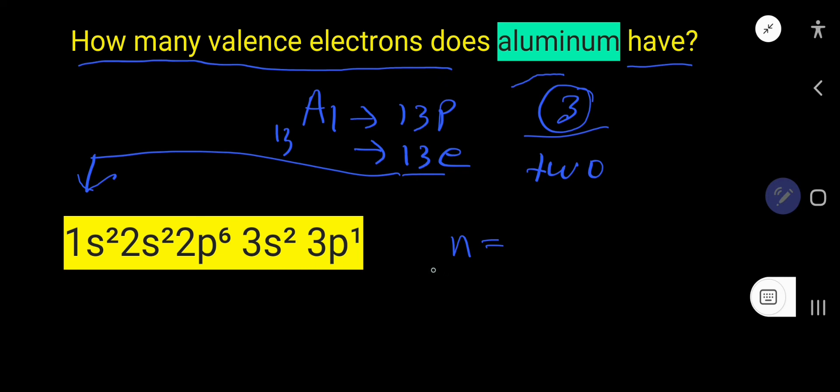by considering the highest value for the principal quantum number. Here, 1, 2, 3 are the principal quantum numbers, so the highest value of principal quantum number is 3. For n equals 3, you are getting 3s and 3p here, right? For 3s and 3p, you are getting here 2 plus 1, that is three electrons. So the outer shell